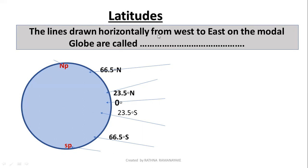On the model globe there are 180 latitudes. There are seven main latitudes.